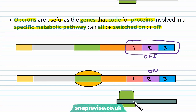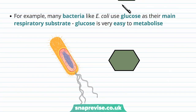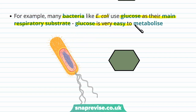When switched on, an mRNA is made containing the information for each of the three genes. There are different operons based on the genes that fit into a category — one operon may have genes for a particular pathway, and another operon for genes for another pathway. For example, many bacteria like E. coli tend to use glucose as their main respiratory substrate, just like we do, because glucose is very easy to metabolize.